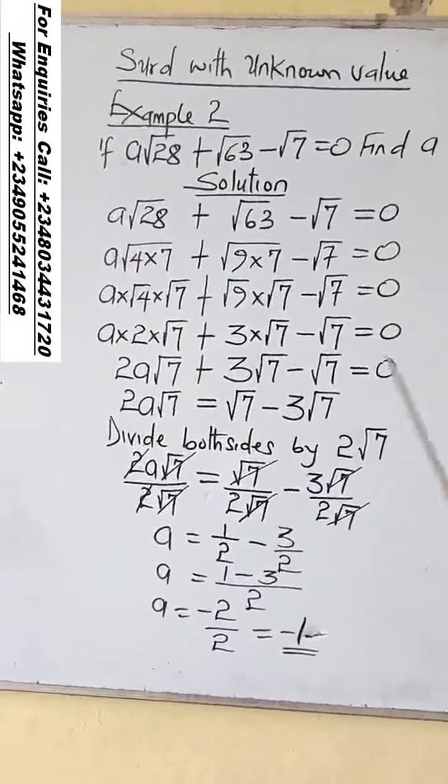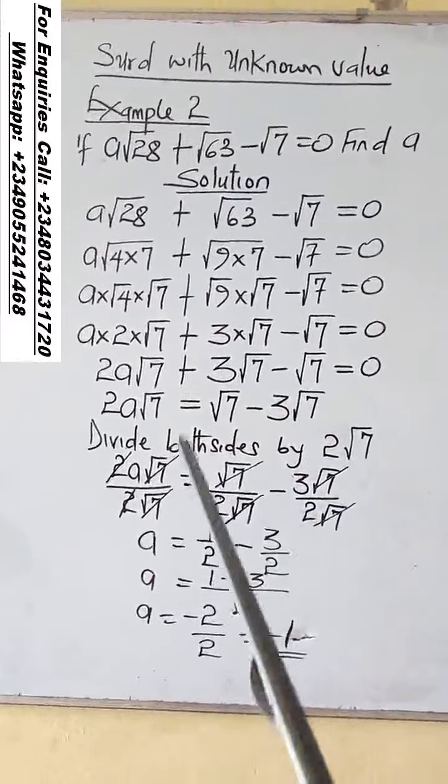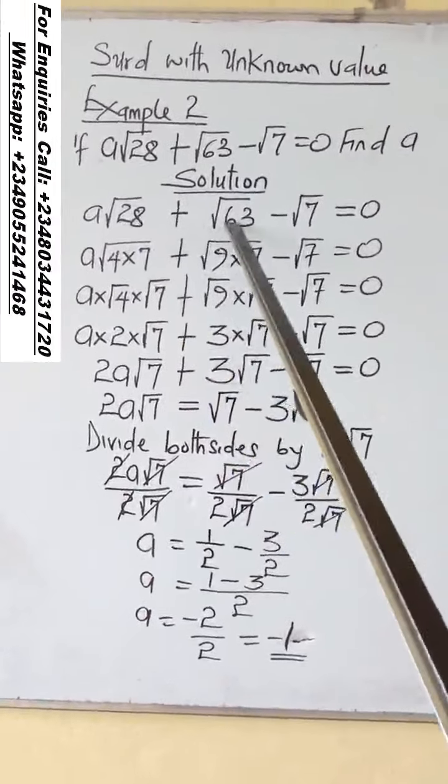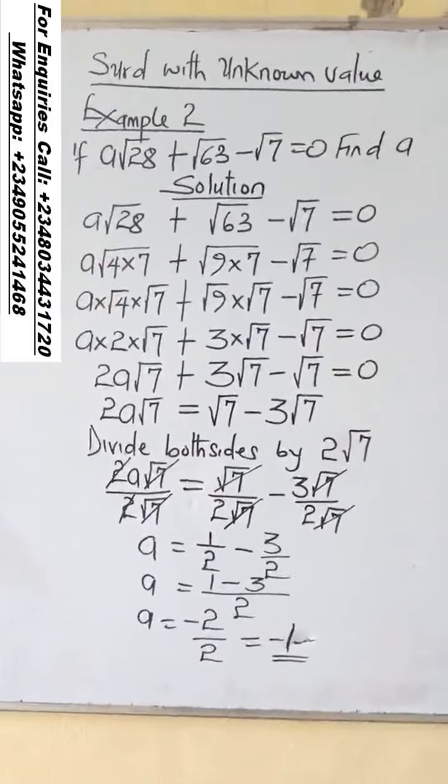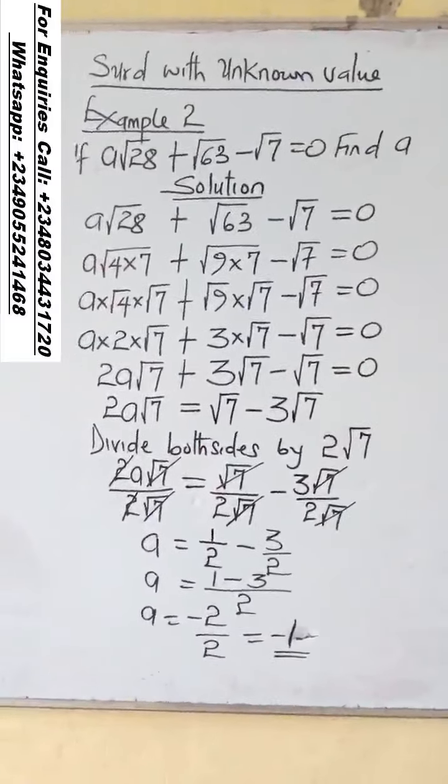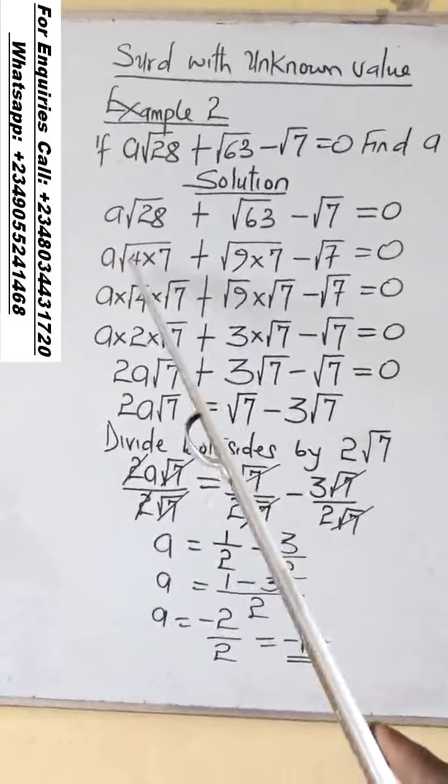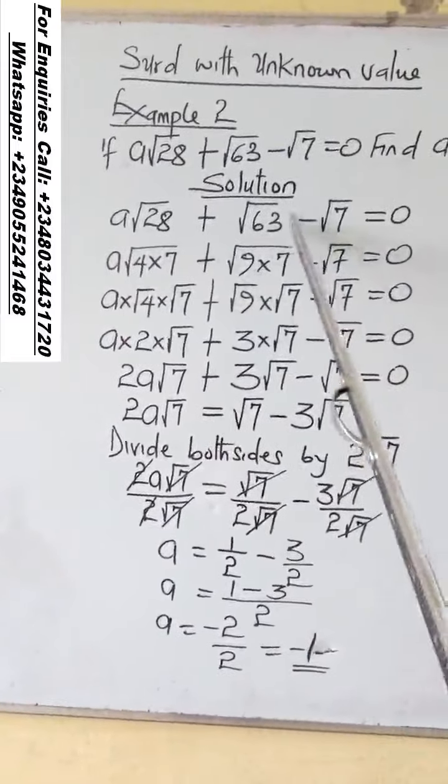The same thing with the first example. Simplify 28, 63, and 7. If possible, try as much as possible to use the perfect square in it.